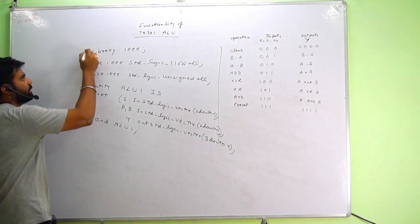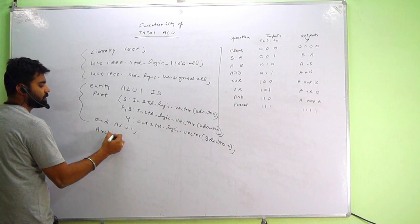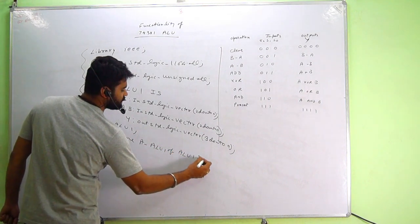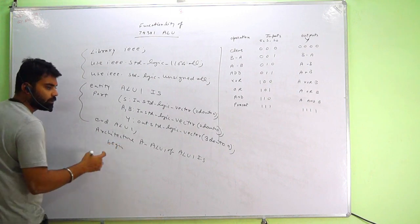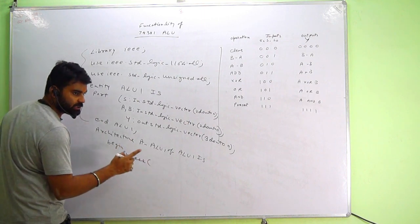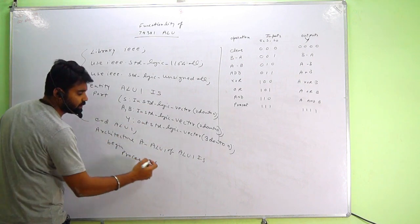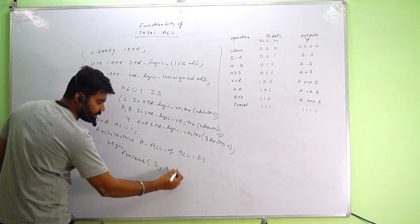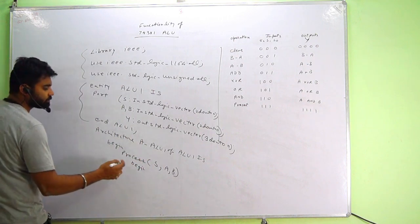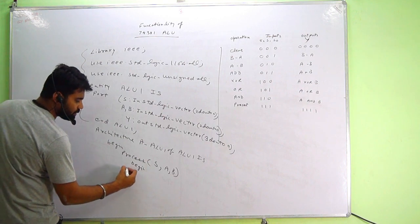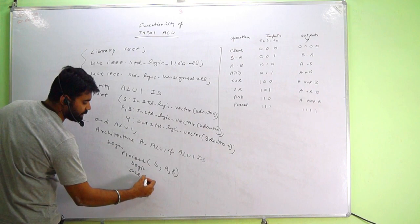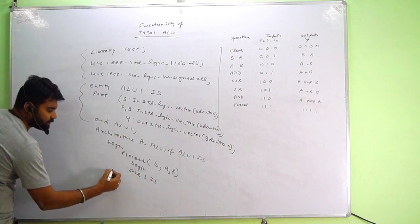This is the entity part and the library part. Then architecture: architecture A_ALU1 of ALU1 is begin. Then a process is introduced, followed by the sensitive list. The sensitive list includes S, A, and B — if any of S, A, or B changes, the output will change. Begin.